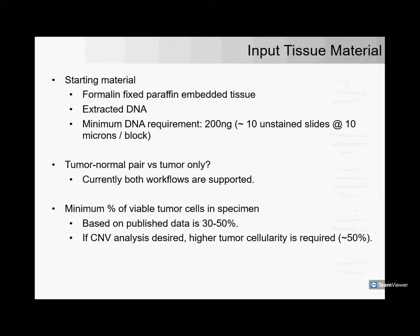In terms of minimum proportion of viable tumor cells, published data discusses thresholds from 30%, 50%, down to as low as 20%. Since I was also interested in copy number analysis, for the samples I've worked on so far I've tried to keep it to at least 50 to 60% proportion of viable tumor cells.